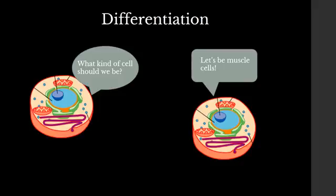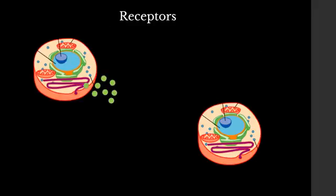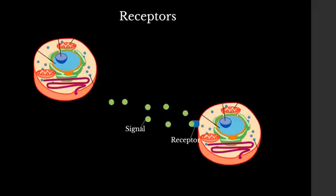One way cells do this is by using what's called a receptor. A receptor is a protein on the surface of the cell that binds molecules sent out by nearby cells. This signal is relayed to the inside of the cell, setting off a chain of events that end up in the nucleus.